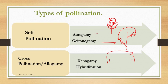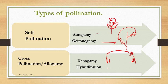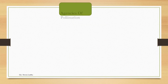Xenogamy is the transfer of pollen grains from the anther to the stigma of one plant to another plant. They should be of the same species, though not necessarily genetically similar. Hybridization takes place between two plants which may be of different species, subspecies, or different varieties. So xenogamy and hybridization are types of cross-pollination.